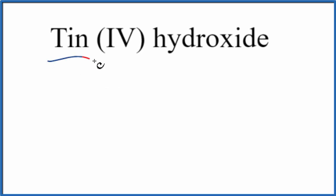In this video, we'll write the formula for tin (IV) hydroxide. So the first thing we'll do, we'll write the element symbol for tin here, as we find it on the periodic table. That's just Sn.